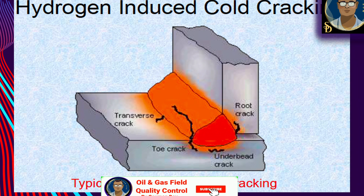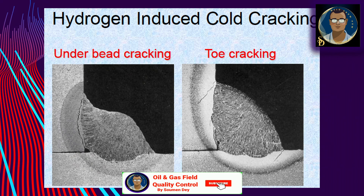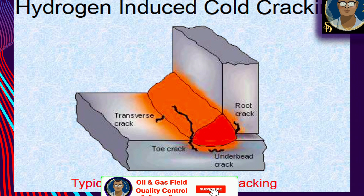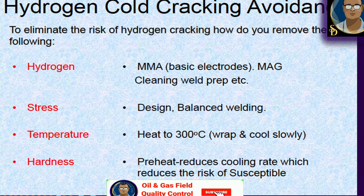Hydrogen induced cracking (HIC) occurs primarily in the coarse-grained region of the heat affected zone and is also known as cold, delayed, or underbead/toe cracking. It lies parallel to the fusion boundary, and its path is usually a combination of inter- and transgranular cracking. The direction of the principal residual tensile stress in toe cracks can cause the crack path to grow progressively away from the fusion boundary towards a region of lower sensitivity to hydrogen cracking, where the crack growth rate decreases and eventually arrests.